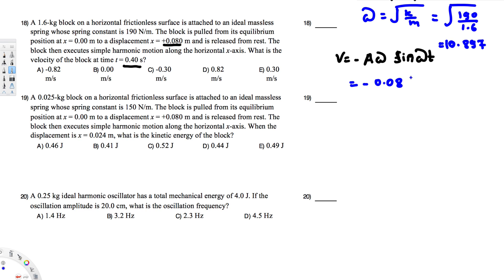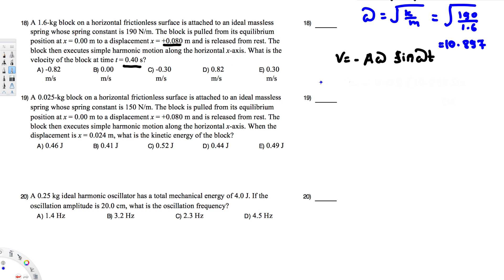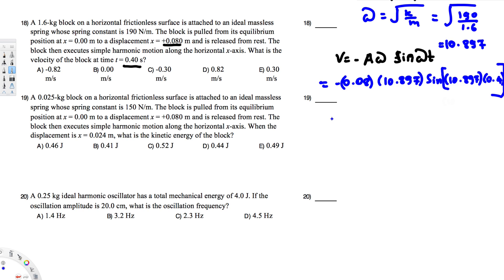So we have v = -0.08 × 10.897 × sin(10.897 × 0.47). If you calculate this, you get 0.817 meters per second, which is approximately 0.82 m/s. So the answer is D.